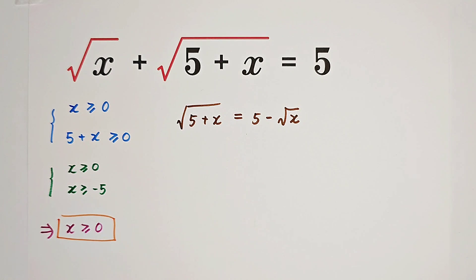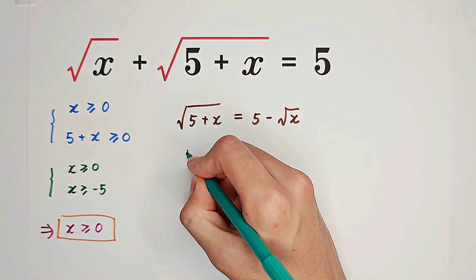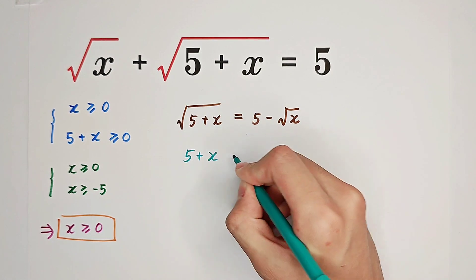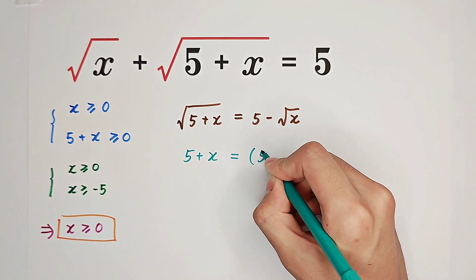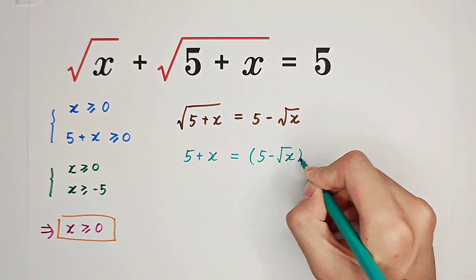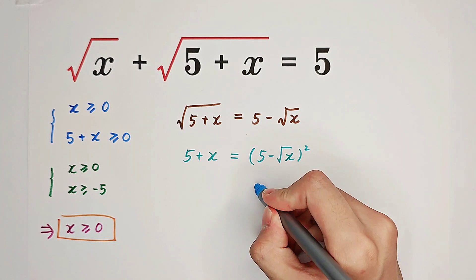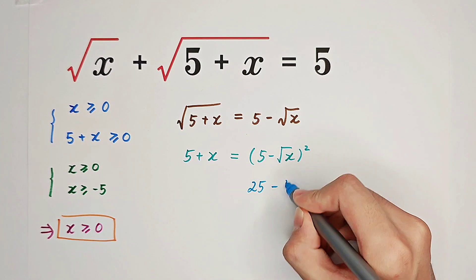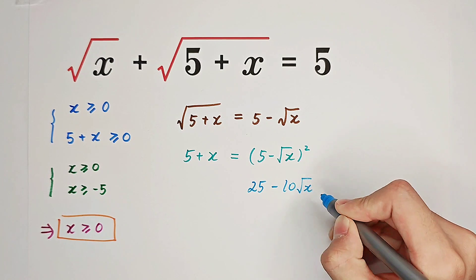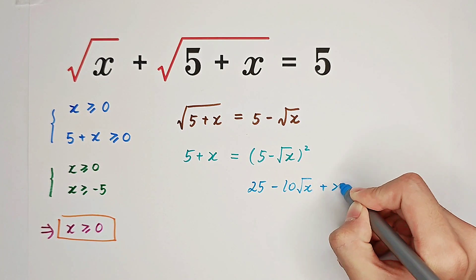As our next step, we can square both sides, and we get 5 plus x equals 5 minus square root of x all squared. The right-hand side expands to 25 minus 10 square root of x plus x.